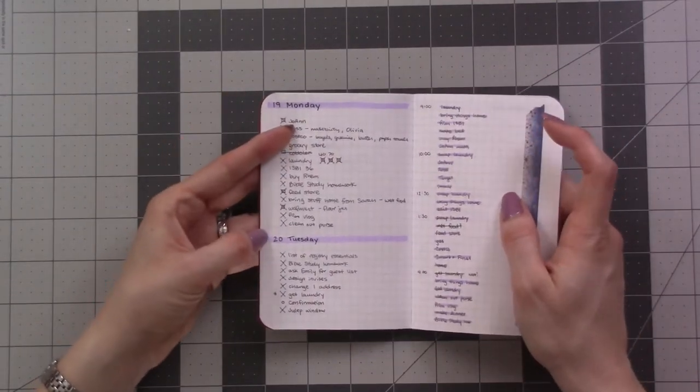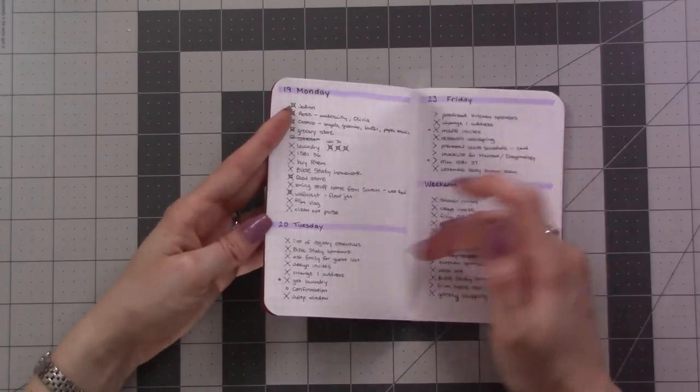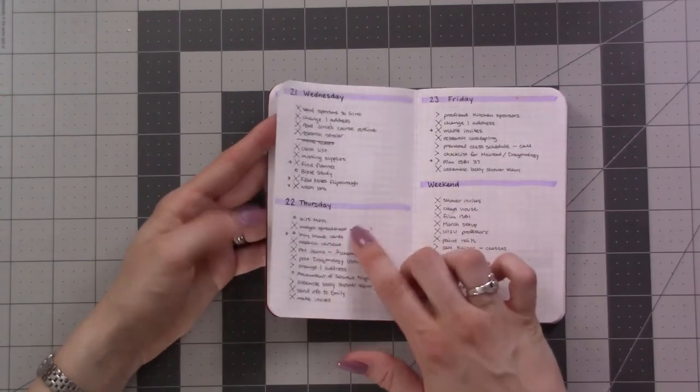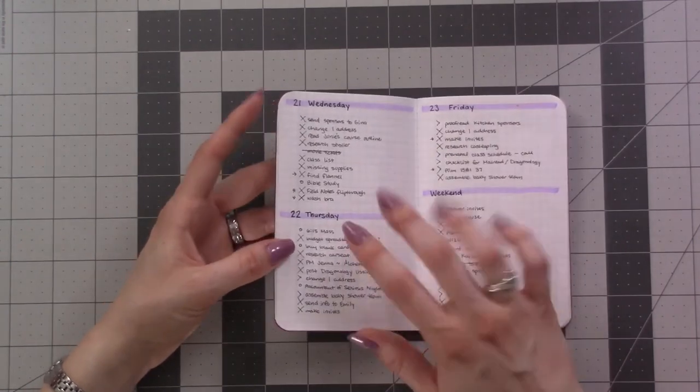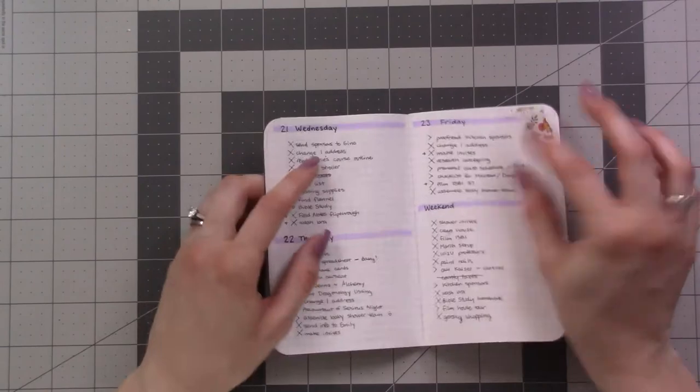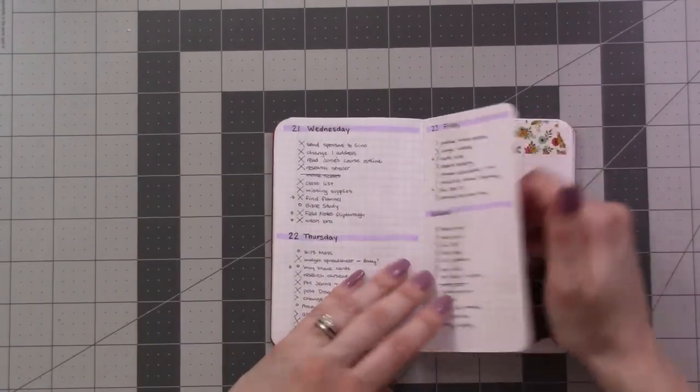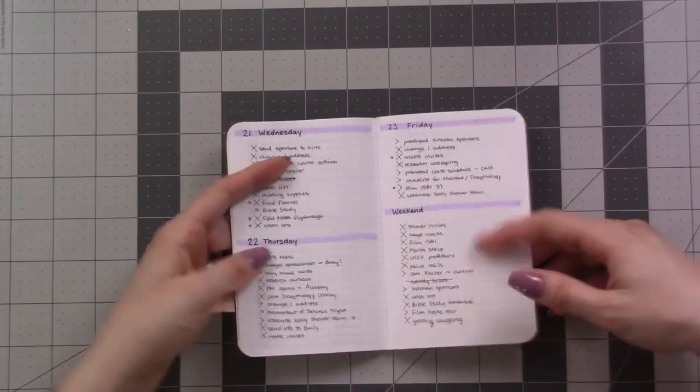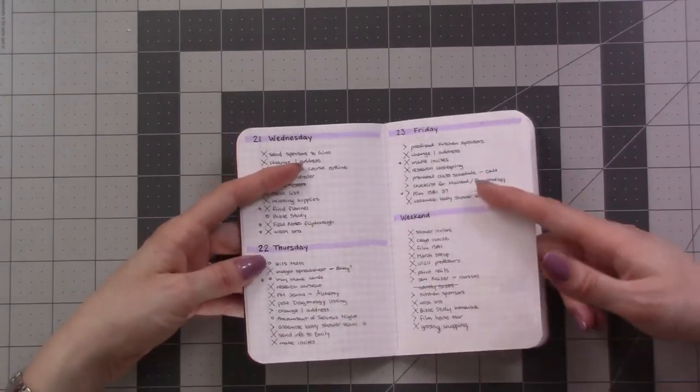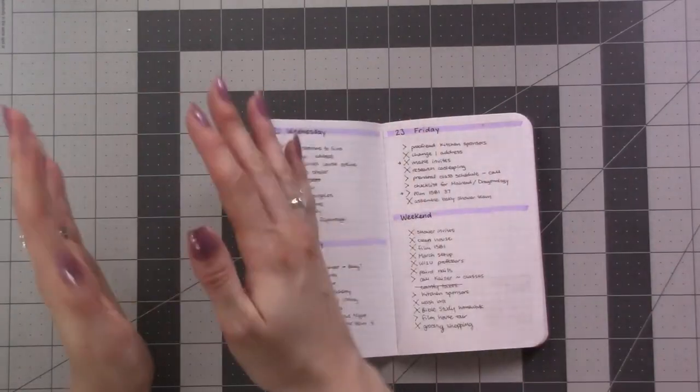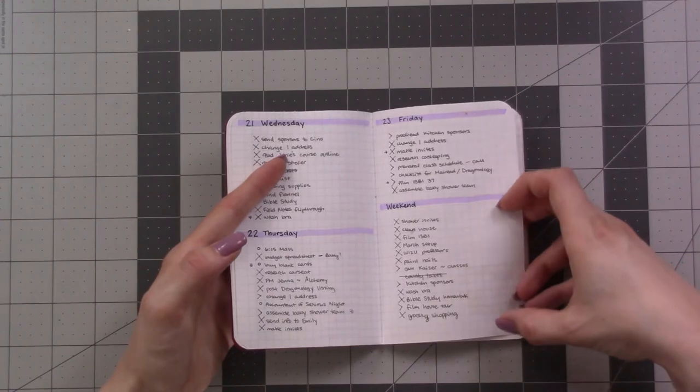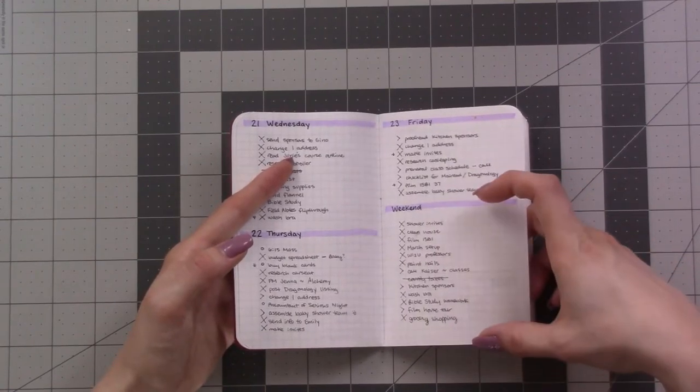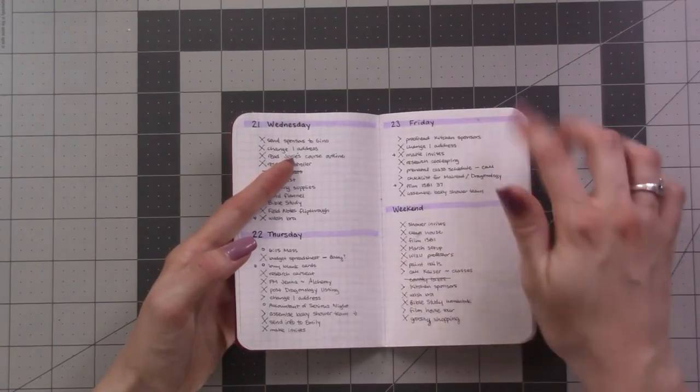Here's just Tuesday. This is what my dailies looked like. This is a throwback to early 2017 when I started in a traveler's notebook for the first time. I had just one for the weekend because unless there's a lot going on that's out of the house, I tend to have one list of things I want to get done over the weekend.